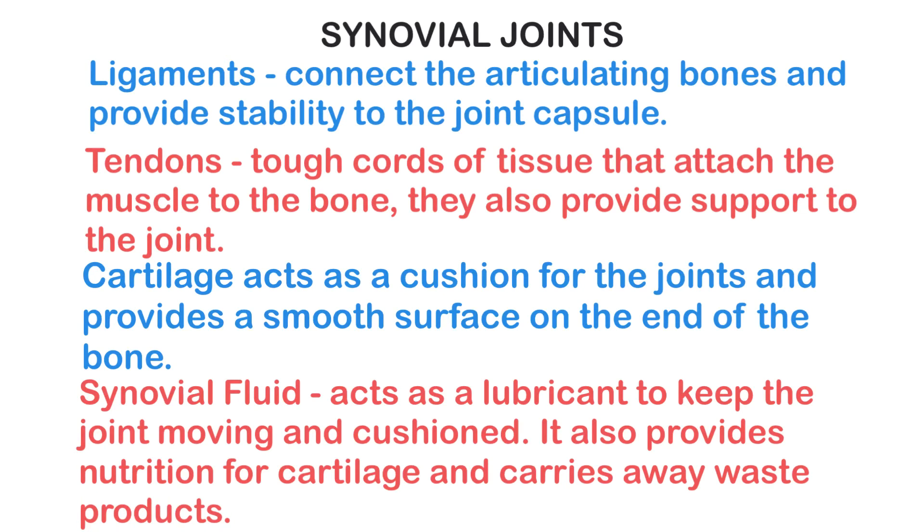Ligaments connect the articulating bones and provide stability to the joint capsule. Tendons are tough cords of tissue that attach the muscle to the bone and also provide support to the joint. Cartilage acts as a cushion for the joints and provides a smooth surface on the end of the bone. Synovial fluid acts as a lubricant to keep the joint moving and cushioned, provides nutrition for cartilage, and carries away waste products.